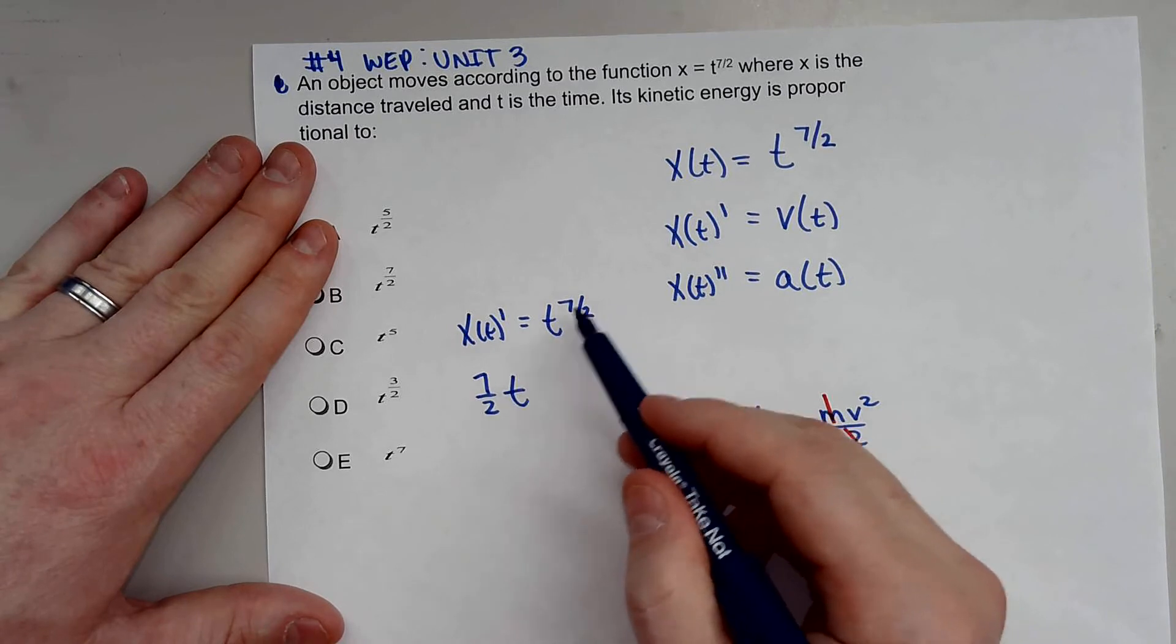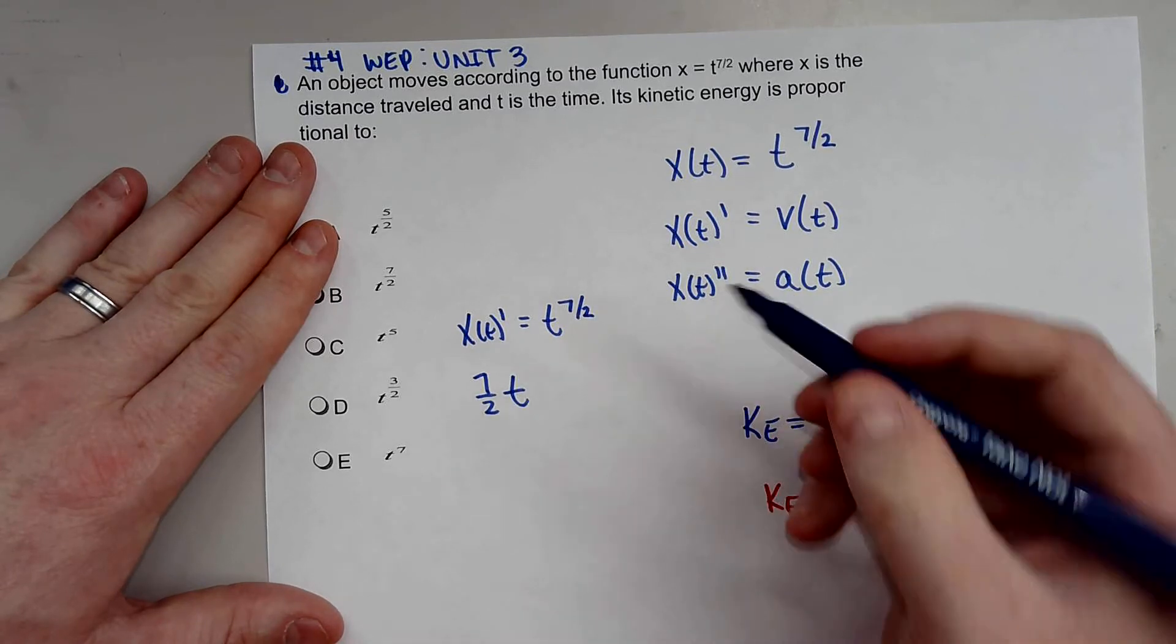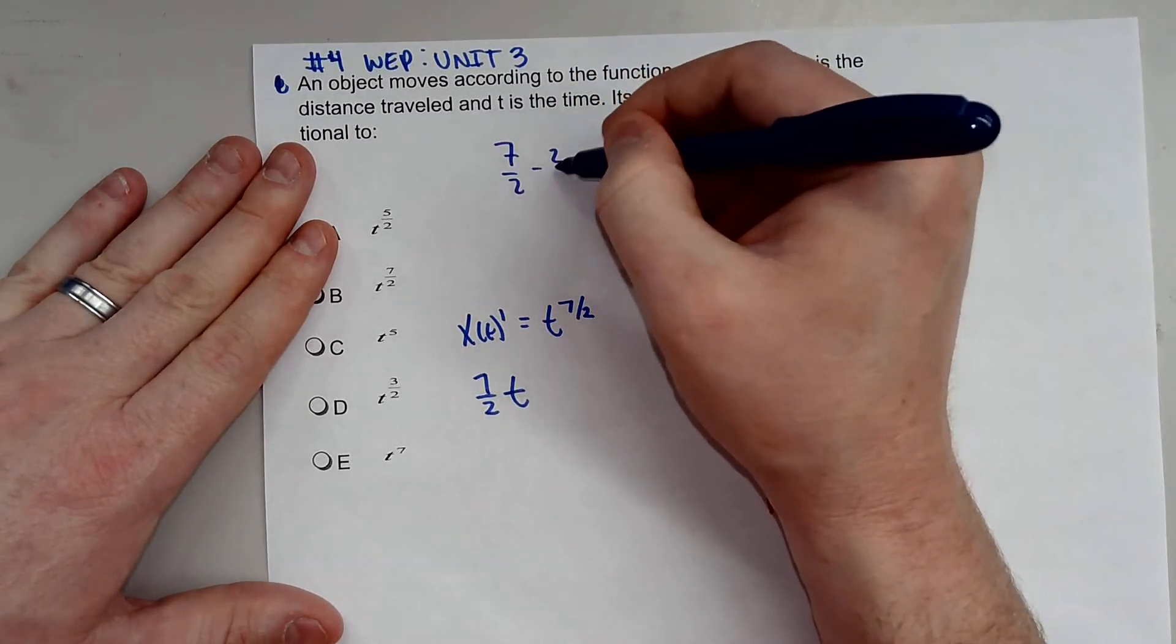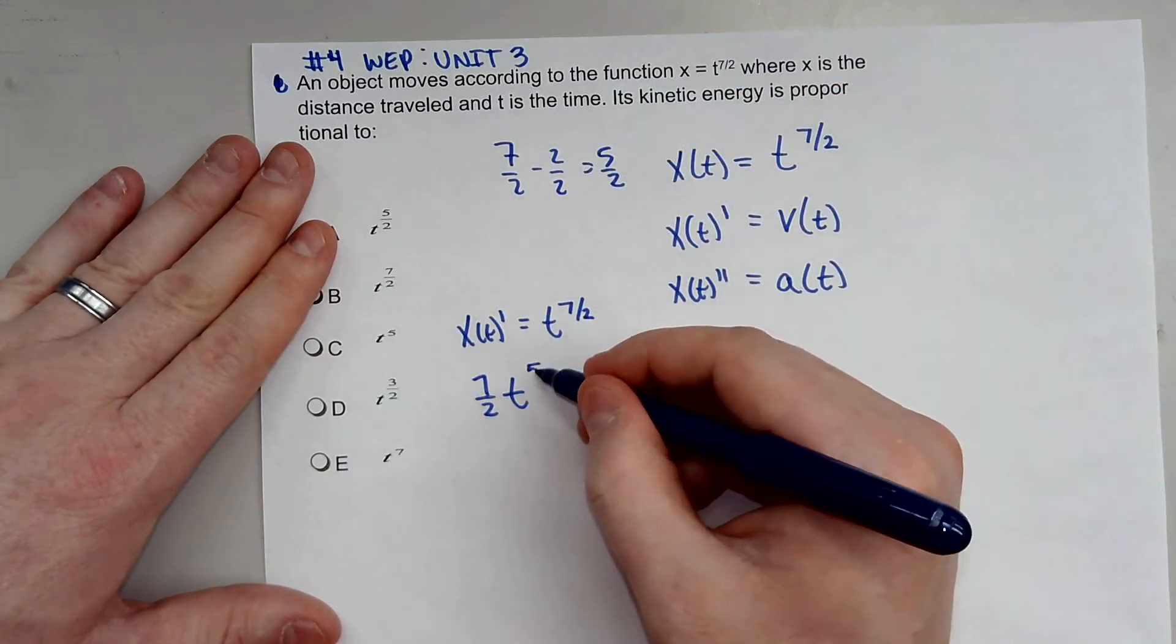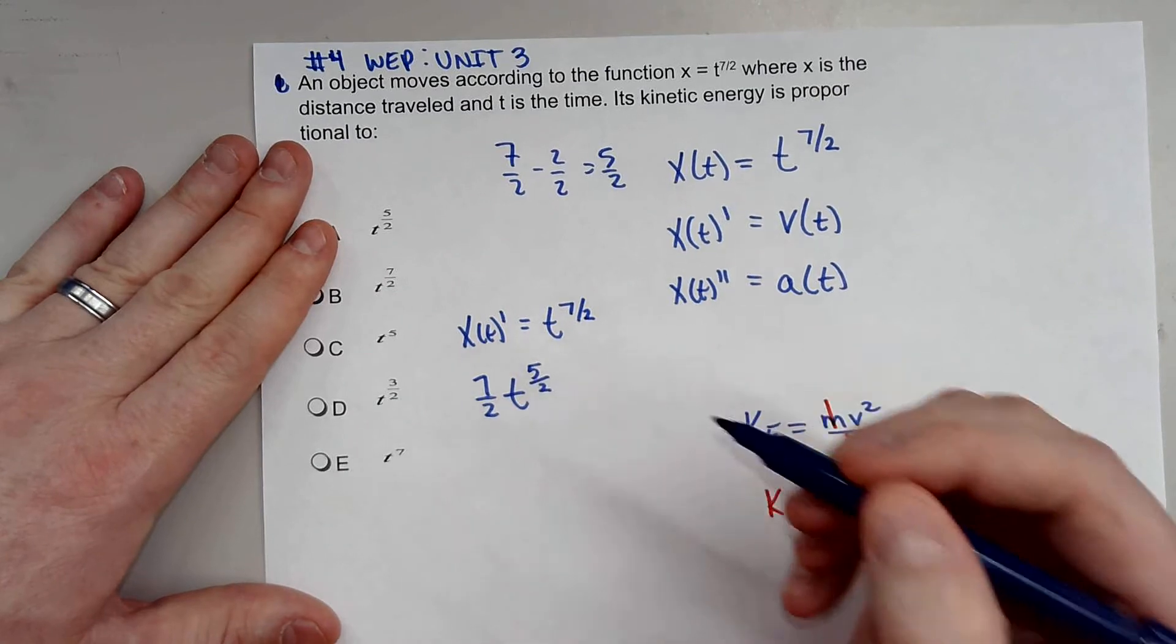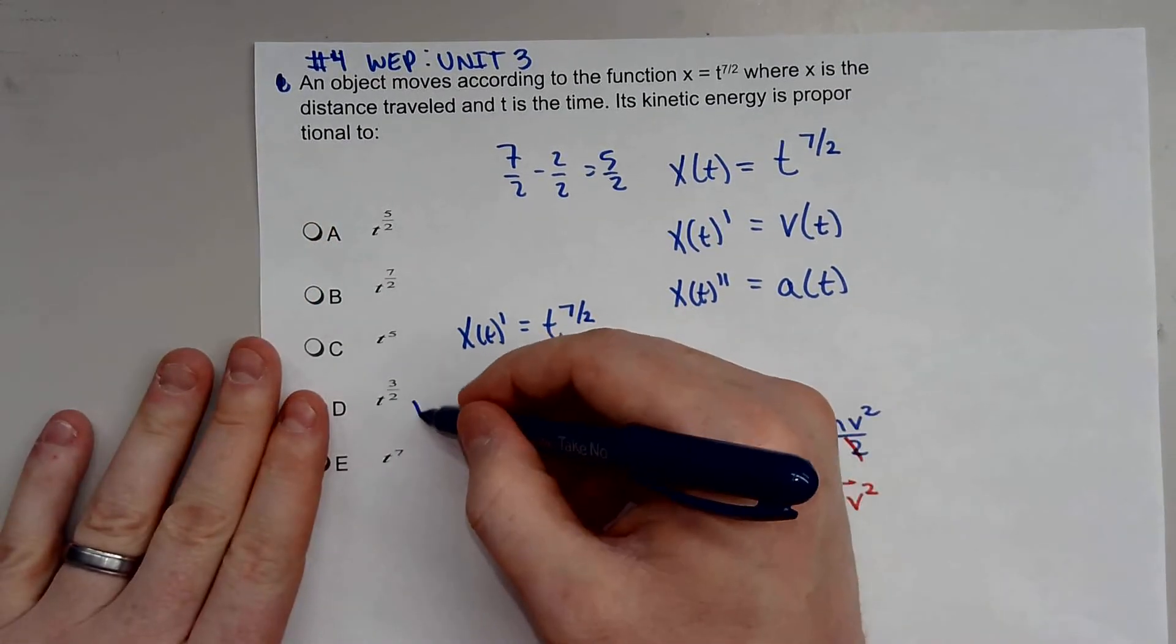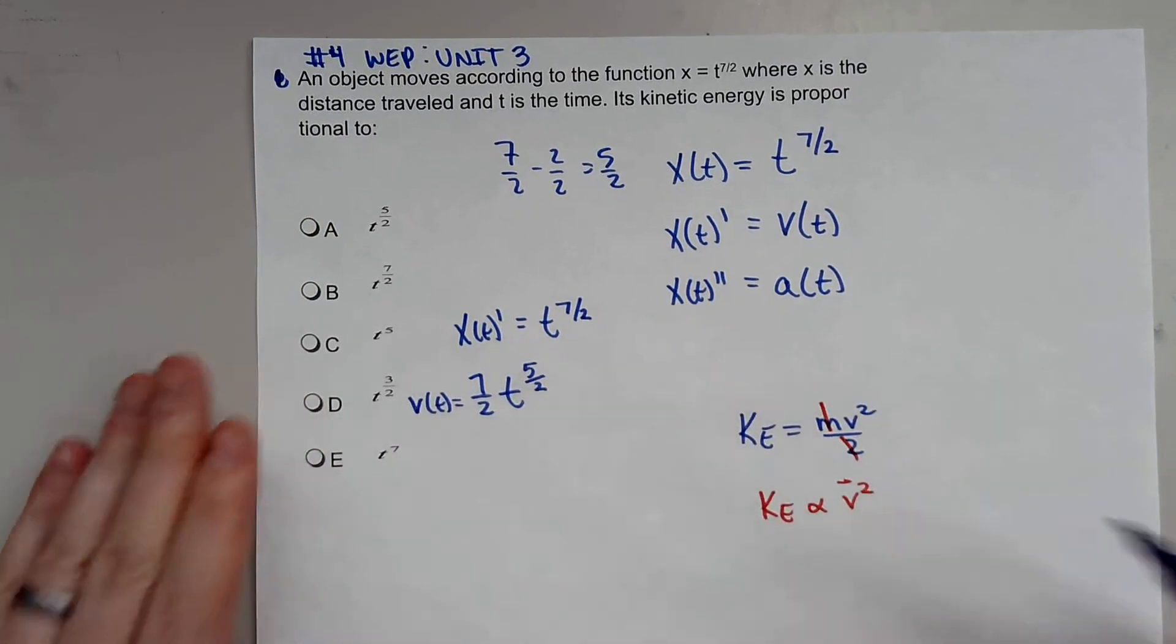And then you have to subtract 1, so 2/2, so 7/2 minus 2/2, that's subtracting 1 from it, gives us 5/2. So up here we're going to have 5/2. So this is our velocity function with respect to time.